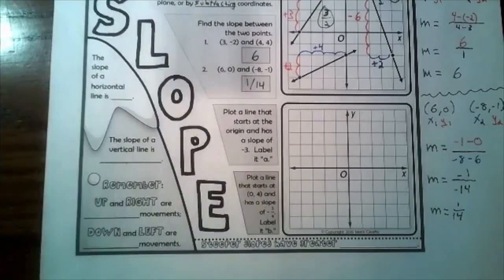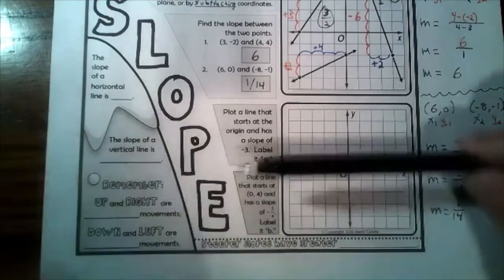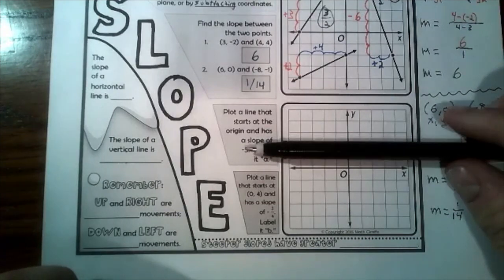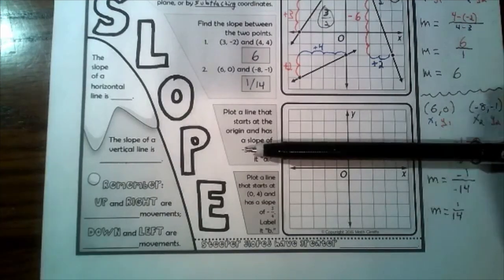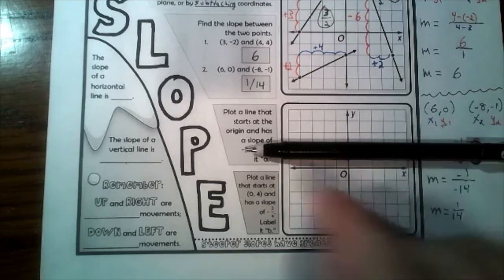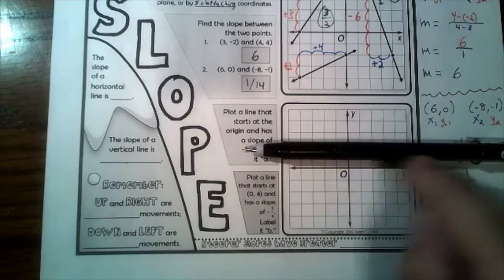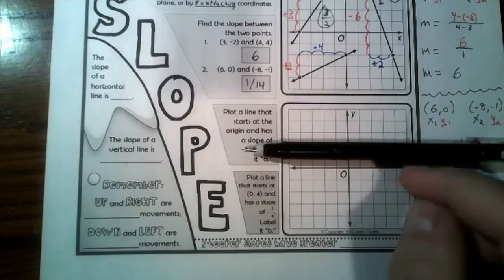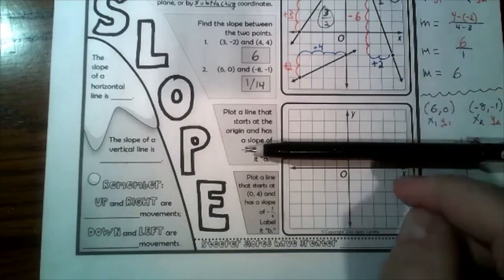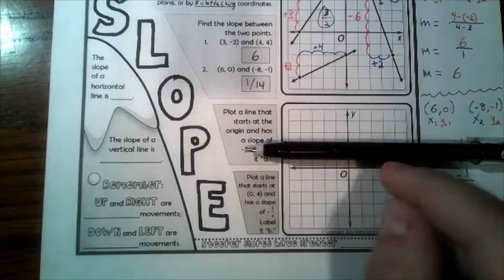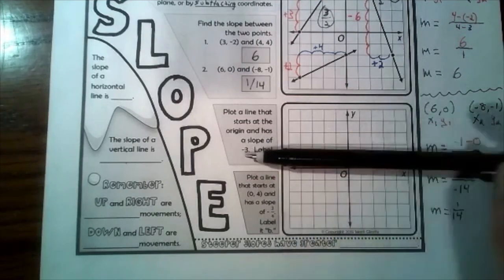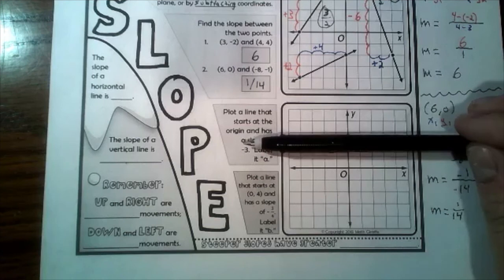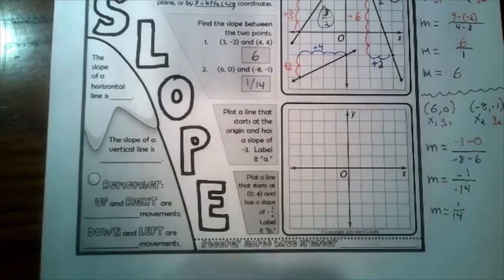Now I'm going to go over the slope of a horizontal and vertical line. A horizontal line looks just like this. Our slope is the ratio between the rise and the run as we read from left to right — just like we read a book. Does this line go up or down? Is it rising, is it falling? No, it's going steady. If a skier was skiing on here, they wouldn't go up or down — they'd probably have to walk. So the slope of a horizontal line is zero.